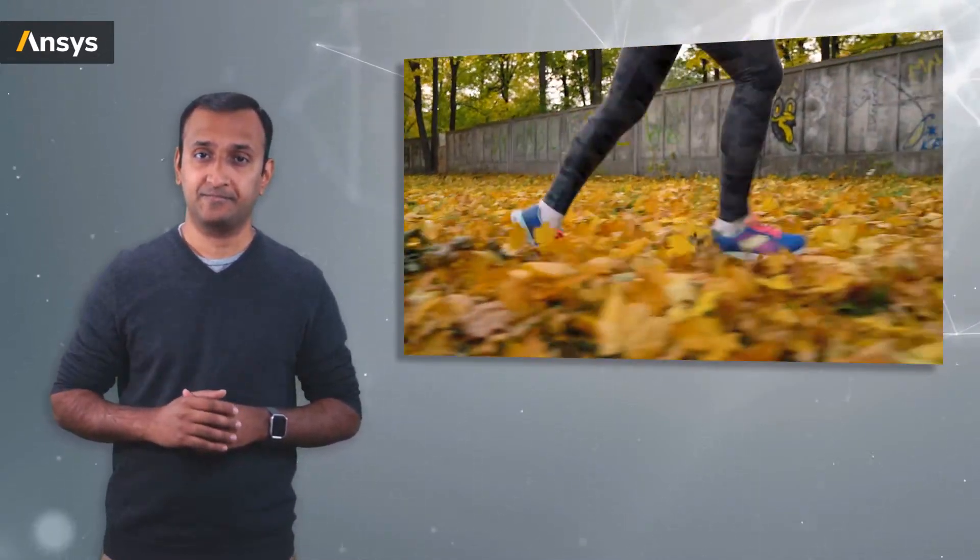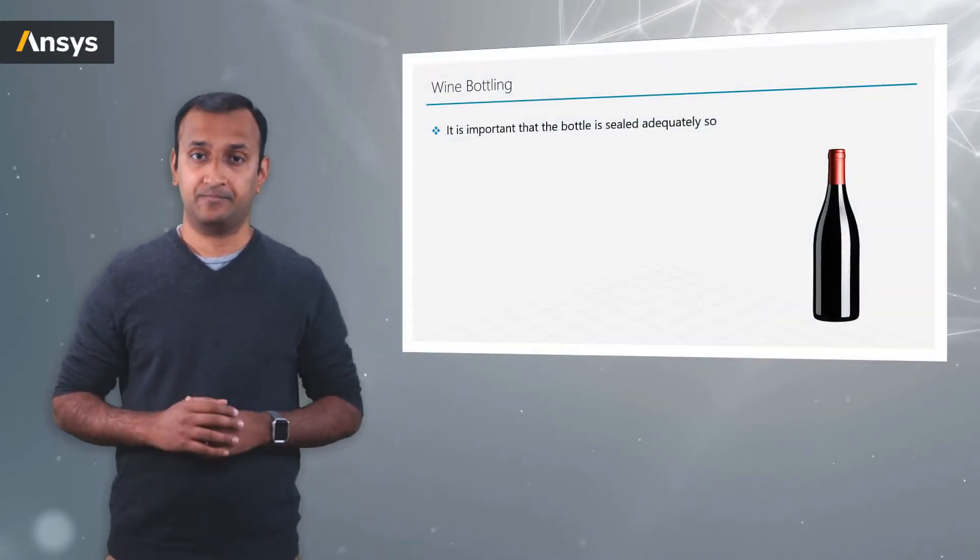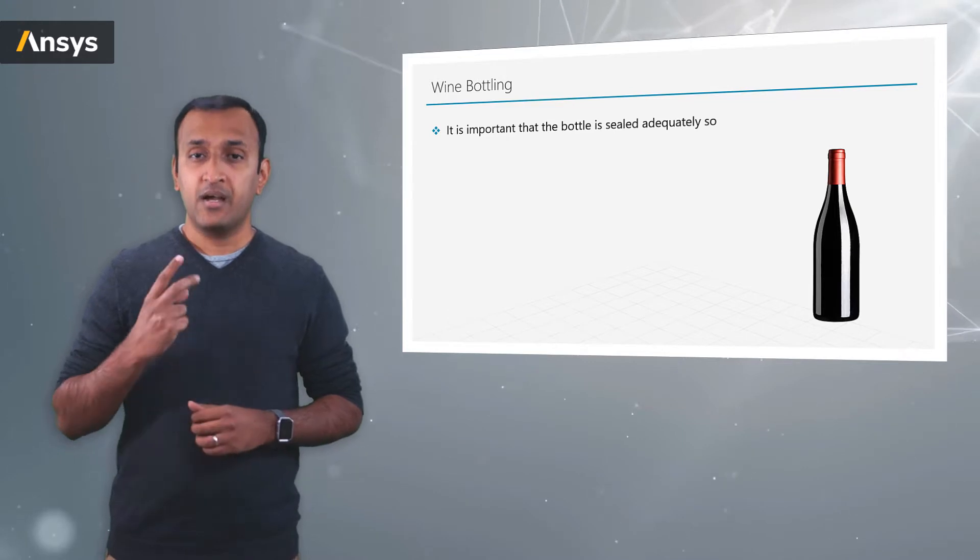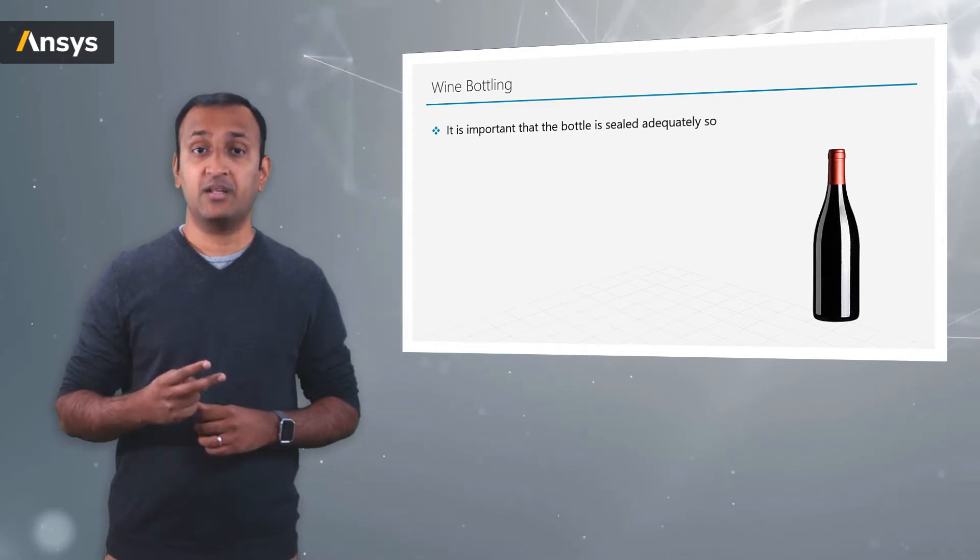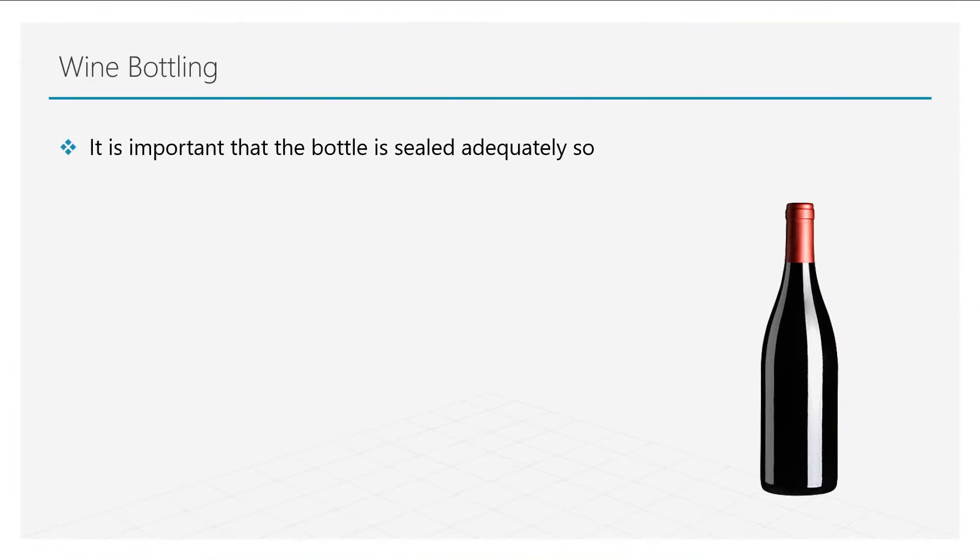Let's start with the first example, which is the bottling of wine. There are two important factors that the manufacturers consider in the wine bottling process: the wine does not leak during transportation or during regular usage and shelf life.